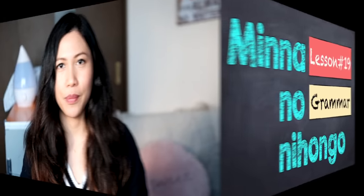Konnichiwa! Rose desu! Welcome back! In this video, we will learn new Japanese grammar based from the Minna no Nihongo textbook, lesson 19. Here we will learn about the ta form of the verb and its uses. If you're ready, hajimemashou!